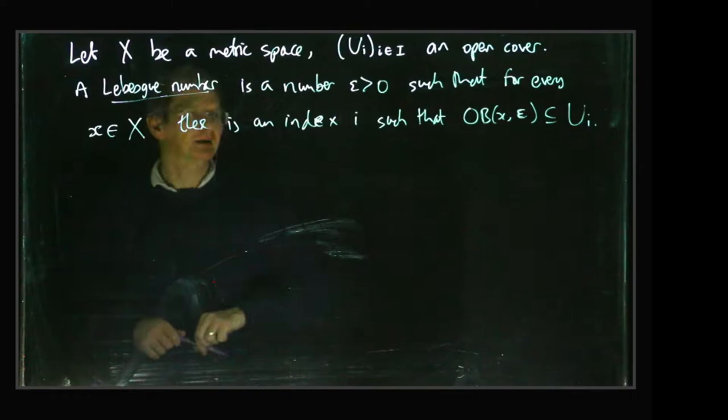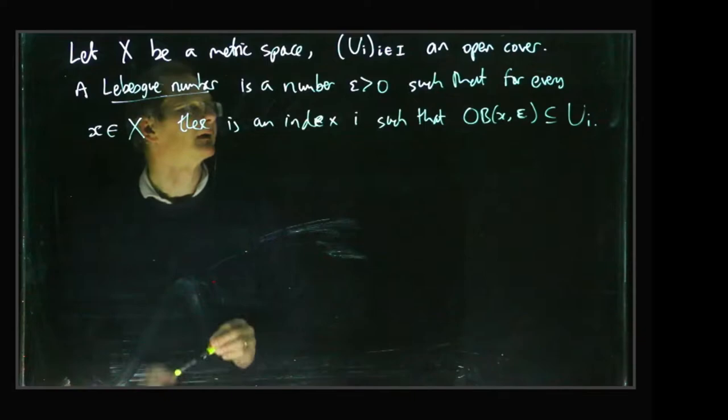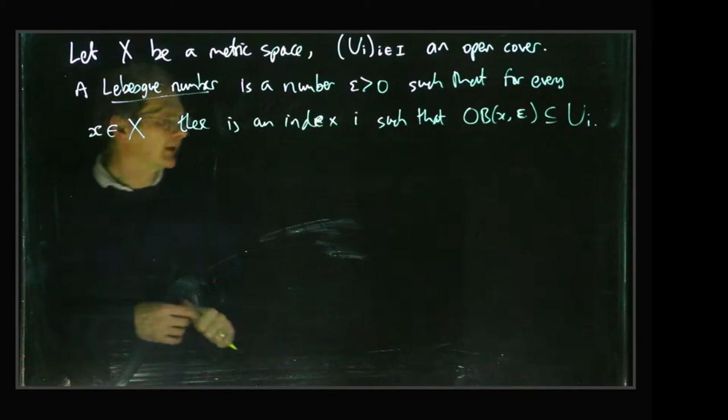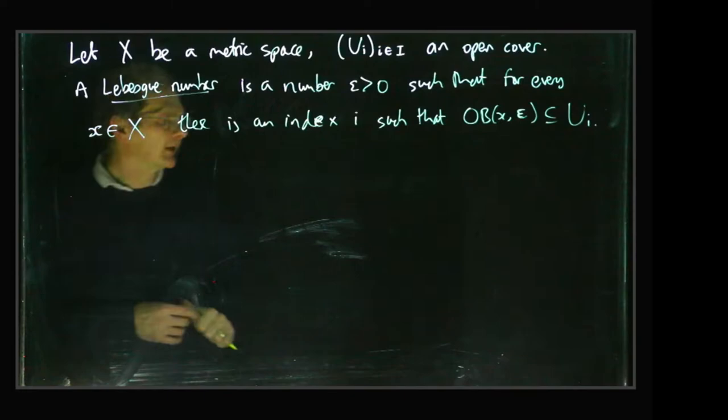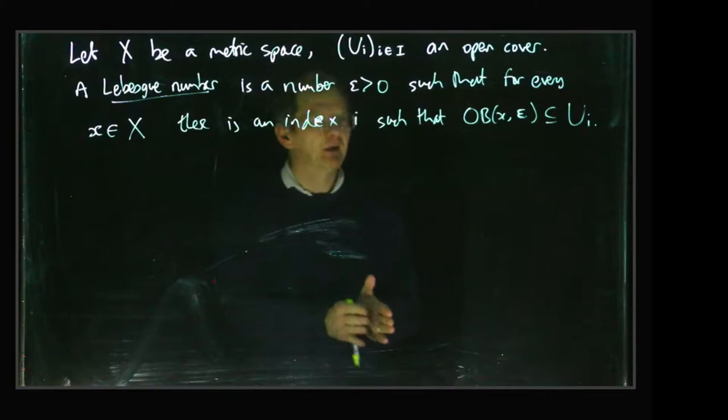Now of course it's not at all obvious that a Lebesgue number exists. In fact, if X is not compact, it's not very hard to produce examples where there is no Lebesgue number. But this is kind of about the minimum size of overlaps between sets in the cover.